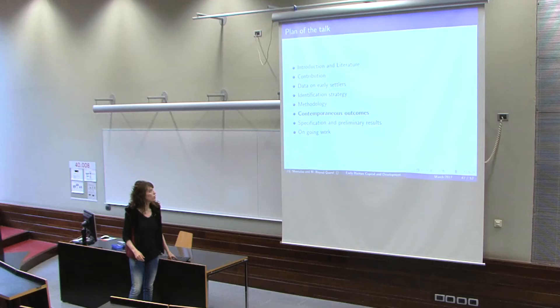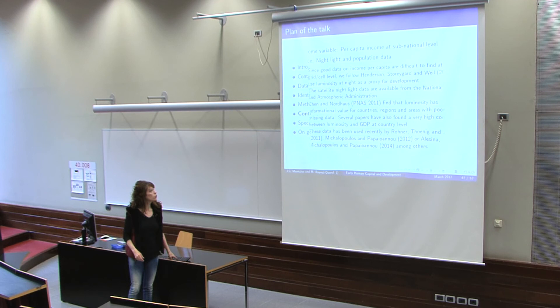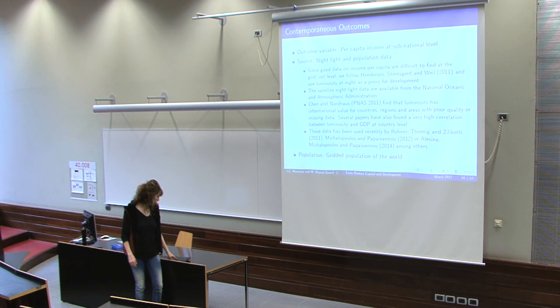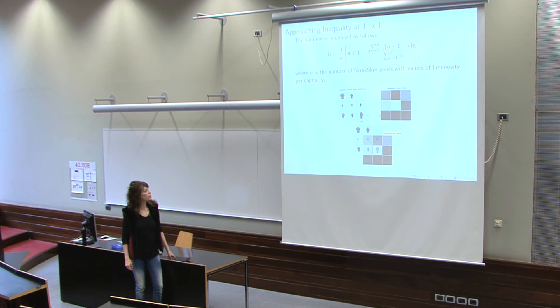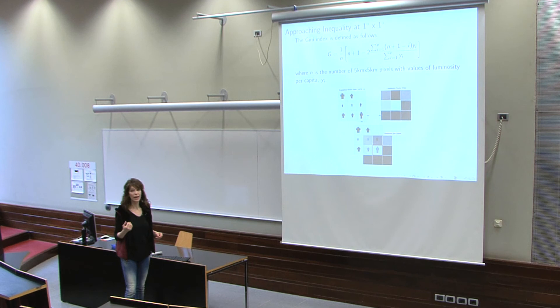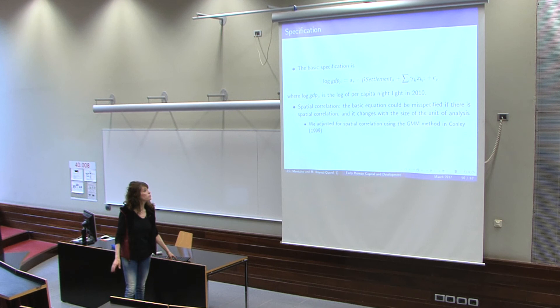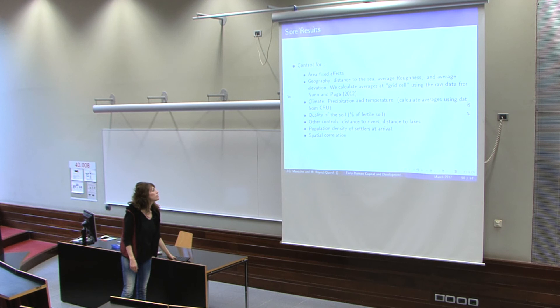We are going to check per capita income using nightlight data from satellites, and also spatial inequality using the density of nightlight. The specification will be simple: we check whether settlement characteristics affect per capita income and inequality, controlling for geography, climate, quality of soil, distance to potable water, etc. But this is very preliminary and we want to be cautious, as this is not the final analysis — it is just analysis with the data we currently have.